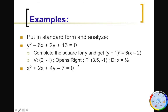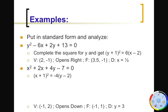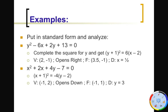For the next problem, you should get (x + 1)² = −4(y − 2). The vertex is (−1, 2), it opens down because of the −4 value, the focal point is (−1, 1), and the directrix is y = 3.